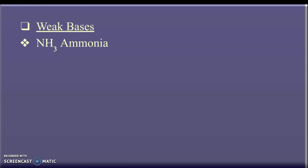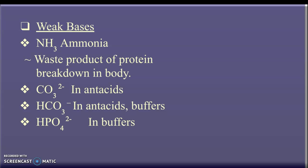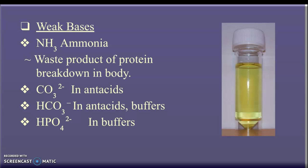Weak bases. Some examples include ammonia, which is a waste product of protein breakdown in the body. I believe that's carbonate ion, but it's also an antacid. Notice how all of these are negatively charged, and so they have their OH separated from them. And then on the side there is your weak acid ammonia, otherwise known as a waste product in urine.